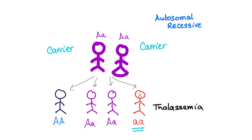Genetically speaking, it's an autosomal recessive condition. Mommy and daddy are carriers. 25% of the offspring will be affected and thalassemic, the other 50% will be carriers, and 25% will be completely normal — a classic autosomal recessive disease.